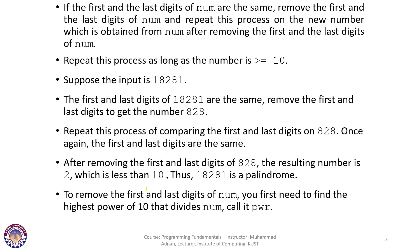If we apply our algorithm to 18281, the first and last digits are both 1 — they are the same. So we remove the first and the last digit to get 828. We repeat this process: the first and last digits of 828 are both 8 — the same again. So we remove them to get 2, which is less than 10.